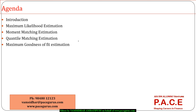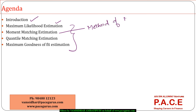So in this context, first we will understand what is meant by estimation of the parameters and what is meant by fitting a distribution to data. Then we will talk about four different methods of estimation of the parameters. One very commonly used is the maximum likelihood estimation approach. There is also the method of moments approach. There are different ways to find out the alpha and beta of a gamma distribution or the mu and sigma of a normal distribution. Then we have quantile matching estimation and goodness of fit maximizing estimation.